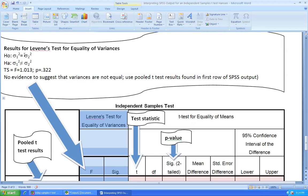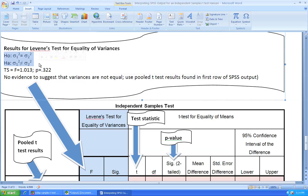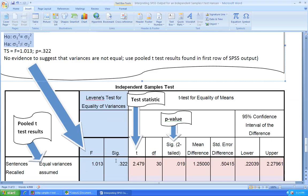The null and alternative hypotheses for Levene's test are that the null hypothesis is variance 1 equals variance 2 versus the alternative variance 1 is not equal to variance 2. The test statistic is an F-test statistic equaling 1.013 and the p-value of this test is 0.322. Comparing that p-value to 0.05, we find that we do not have evidence that would be needed to reject the null hypothesis. Therefore, we do not have any evidence that the variances of the two groups are different from each other.